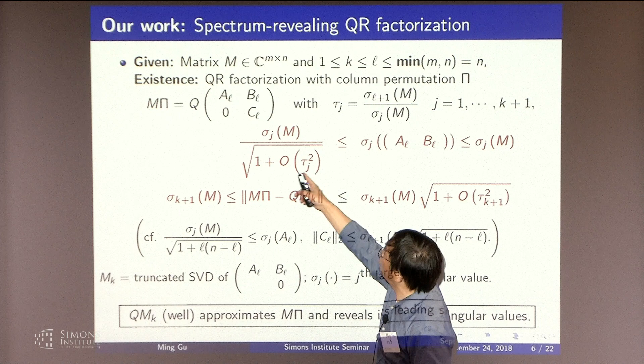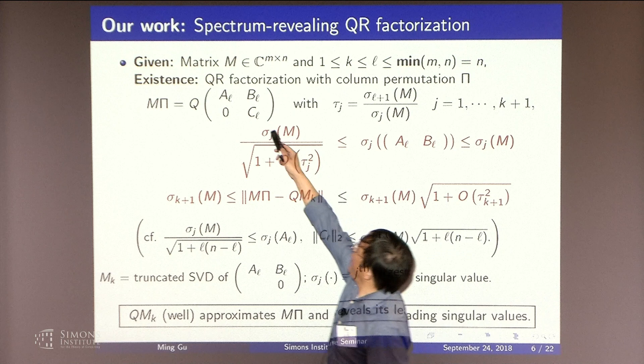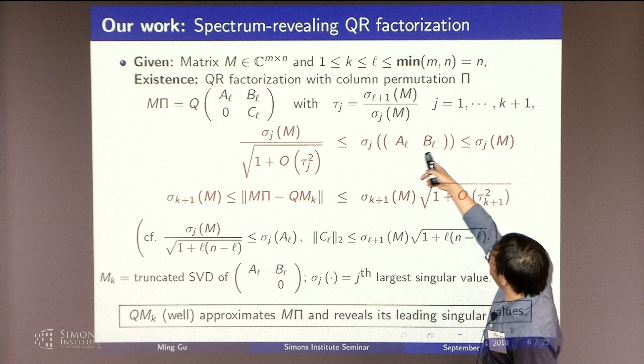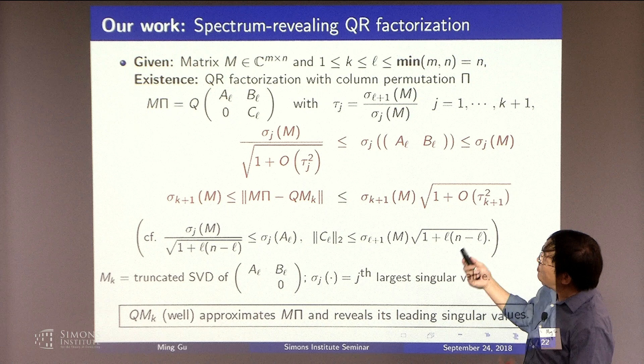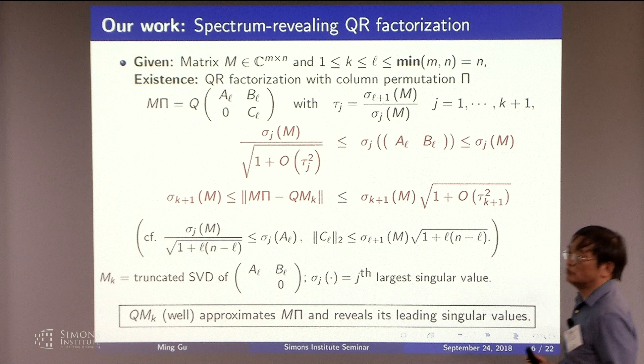So if you are looking at this A or B part of the matrix, then this matrix will have singular values, leading singular values, that are a close match to the original singular values after this factor. Typically, you would expect this to be small. Not always, but typically that's the case.